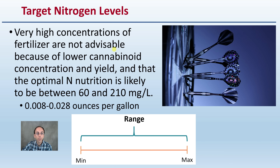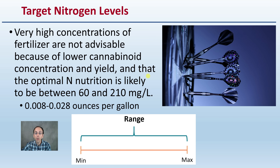Very high concentrations of fertilizer are not advised because of lower cannabinoid concentration and yield. The optimum nitrogen nutrition is likely between 60 and 120 milligrams per liter. That is a pretty big range, but you want to make sure you're definitely not outside it — otherwise you'll be in the region where that yield curve is going down.